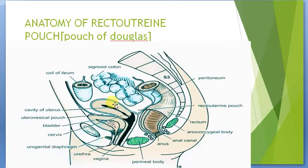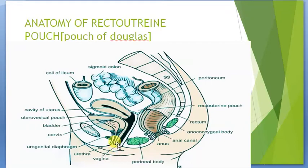This is the female pelvic cavity, not the male. Here we have the uterus, and the uterus through its cervix is connected to the vagina. The vagina passes through the urogenital diaphragm to open on the external surface. Now we are going to see the anatomy of the recto-uterine pouch, or the pouch of Douglas.